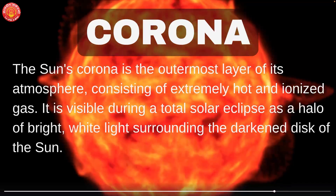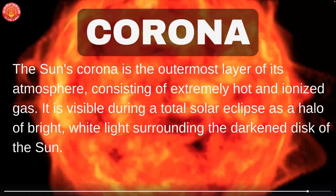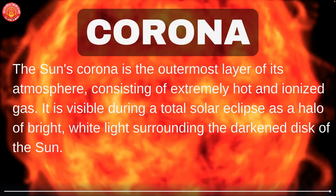The very first concept here is Corona. The sun's corona is the outermost layer of its atmosphere, consisting of extremely hot and ionized gas. It is visible during a total solar eclipse as a halo of bright white light surrounding the darkened disk of the sun.